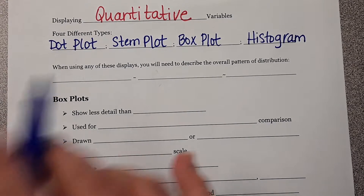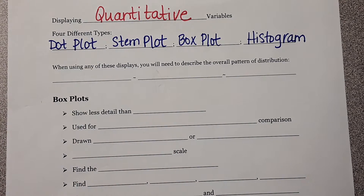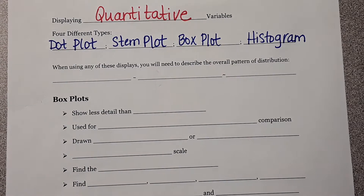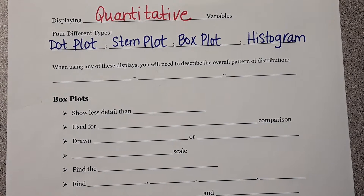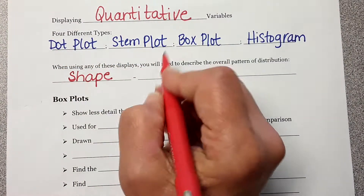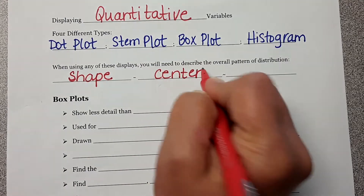These are all for one variable — we're only looking at one variable. Right now, what we're studying is univariate data. In the two-way categorical tables, we were looking at two variables and their association. Here, we're looking at one variable and we're going to find the shape, the center, and we're going to talk about spread.